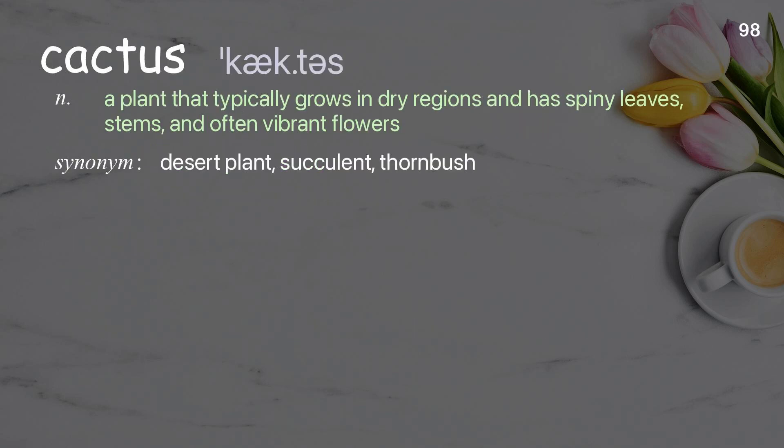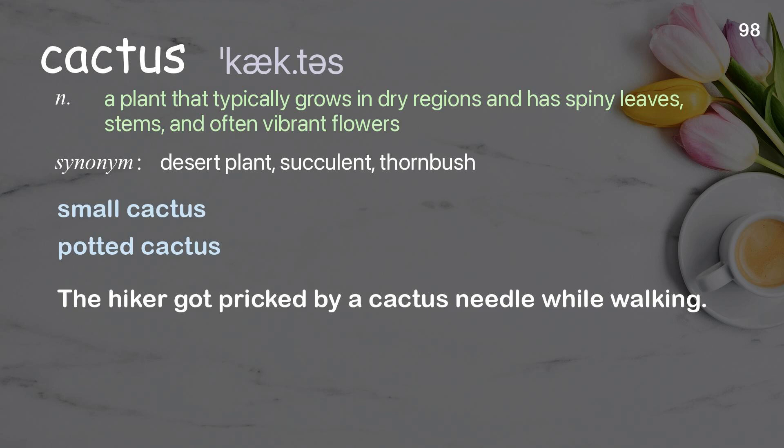Cactus: A plant that typically grows in dry regions and has spiny leaves, stems, and often vibrant flowers. Examples: Small cactus. Potted cactus. The hiker got pricked by a cactus needle while walking.